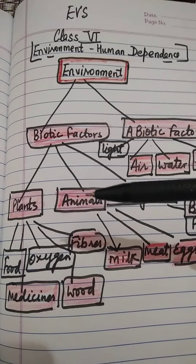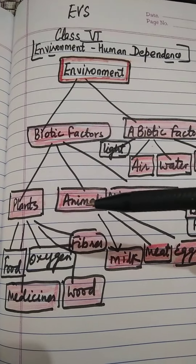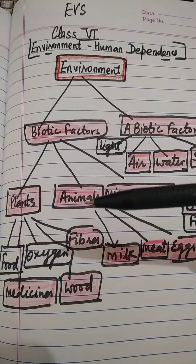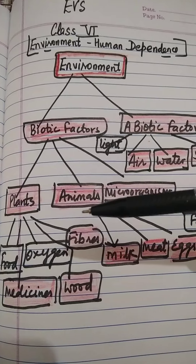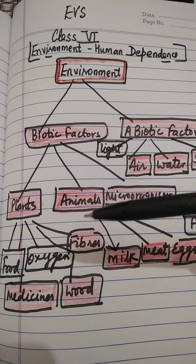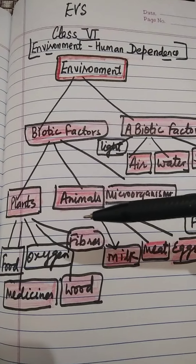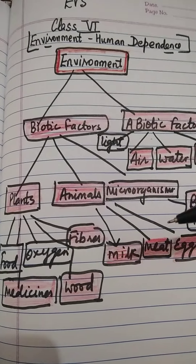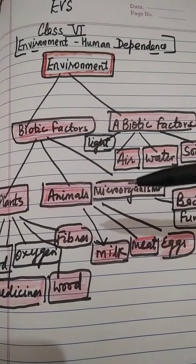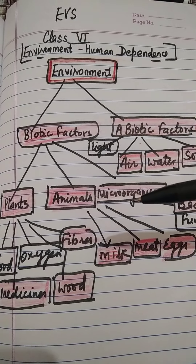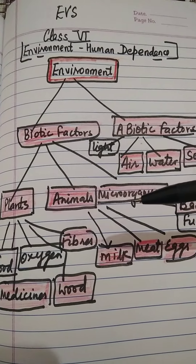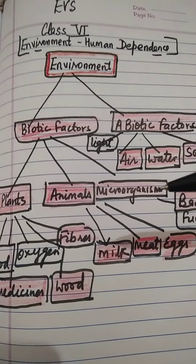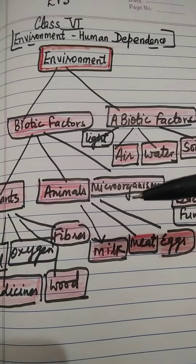Animals support us with milk, meat, eggs, wool, honey, fibers, as well as to do heavy work for us. Microorganisms play an important role in our day-to-day activities.